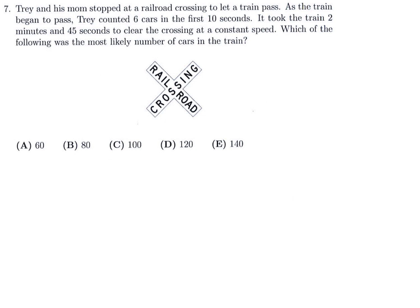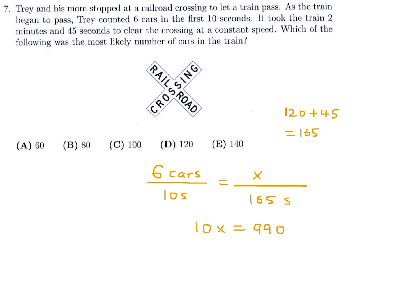Trey and his mom stopped at a railroad crossing to let a train pass. As the train began to pass, Trey counted 6 cars in the first 10 seconds. It took the train 2 minutes and 45 seconds to clear the crossing at a constant speed. 2 minutes and 45 seconds converts to 165 seconds. Setting up a proportion and cross-multiplying: 10x equals 6 times 165, which is 990, so x equals 99.